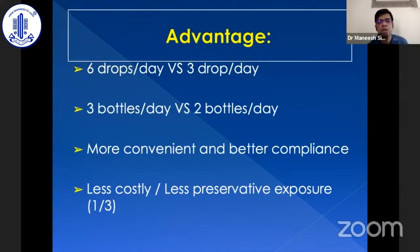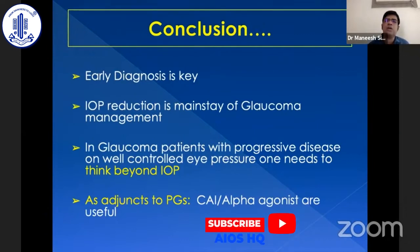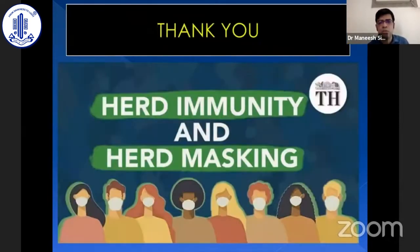To conclude: IOP reduction is the mainstay of glaucoma treatment. But if a patient is progressing despite well-controlled pressure, look into systemic factors and compliance. When adding an adjunct to prostaglandin in normal tension or low-tension glaucoma, a carbonic anhydrase inhibitor or alpha agonist may be a better option than a beta blocker. Thank you.